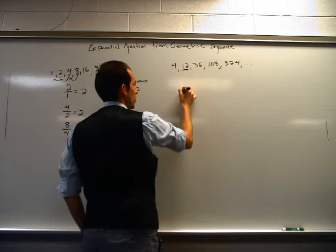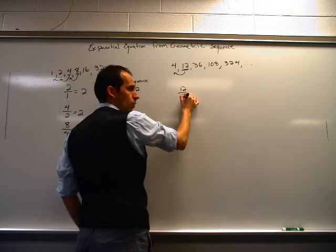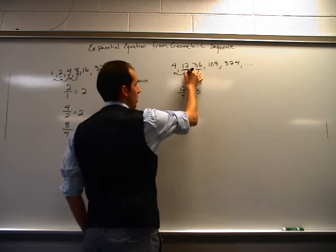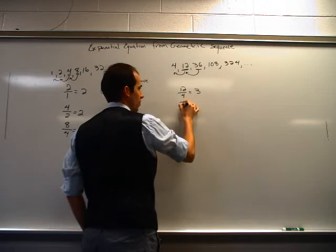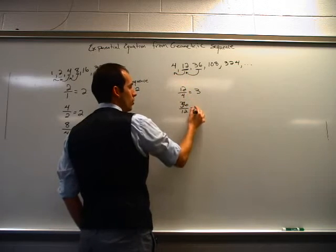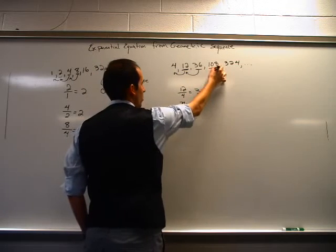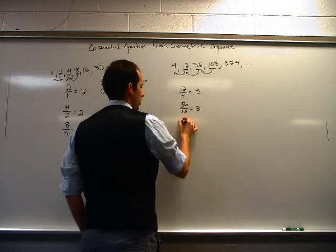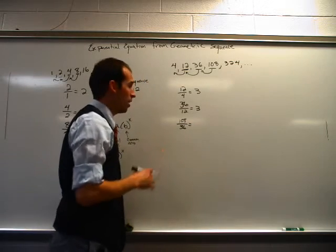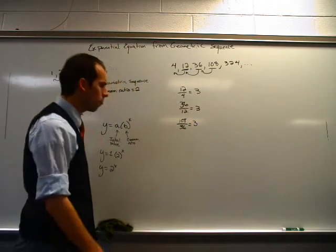Take this first term, 12 divided by the previous term, 4. That gives you 3. All right, good enough. 36 divided by 12, that gives you 3. All right, I'm seeing a pattern here. Let's try 108 divided by 36. I may have made a mistake here, I did this one quickly in my head, but I hope I didn't. It should come out to be 3.